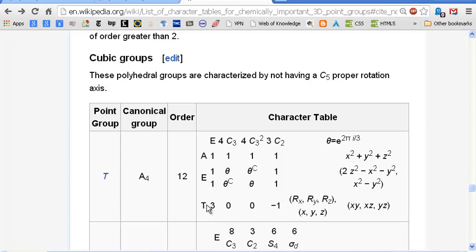How many total symmetry operations do we have for this T point group? Well, there's 1 plus 4 is 5, 9, 12. So here you have 12 symmetry operations that has a maximum of a triply degenerate wave function.